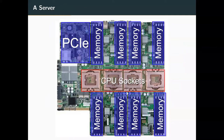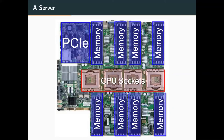Zooming in: in the middle of the server board we have CPU sockets — this is where you put your CPU, except there are four of them because it's a server. One of the important things is to have memory close to your CPU, because it does take time for electricity to move from your memory banks into your socket. So we have memory pretty close to the CPU socket, plus PCIe slots for IO like your graphics card and network interfaces.